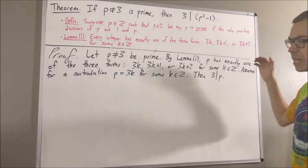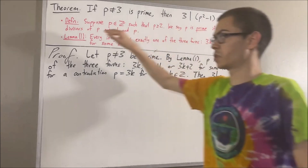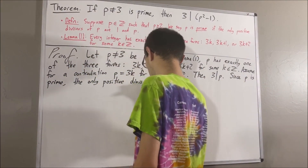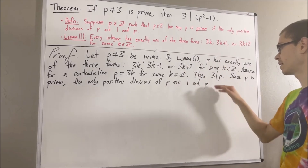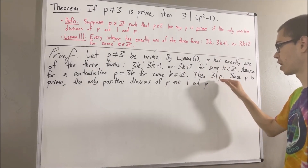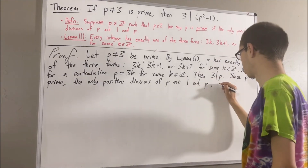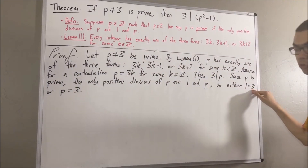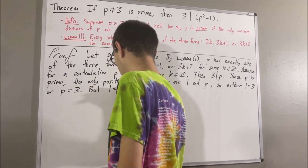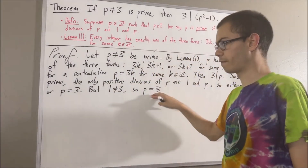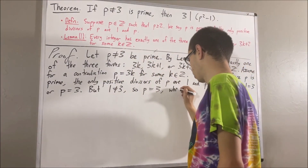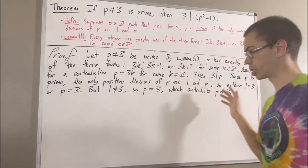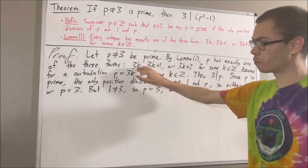However, since p is prime, we know that the only positive divisors of p are 1 and p. And since 3 is a positive divisor of p, this tells us that either 3 is equal to 1 or 3 is equal to p. But 1 is not equal to 3, so we must have that p is equal to 3. But this contradicts the fact that p is not equal to 3. So this eliminates the possibility that p has the form 3k.